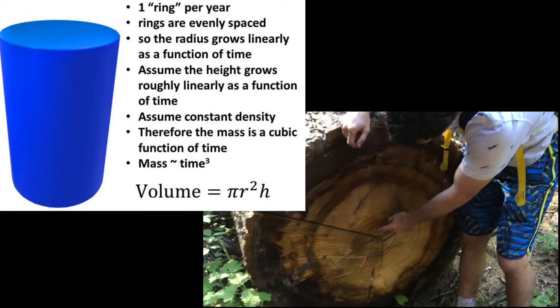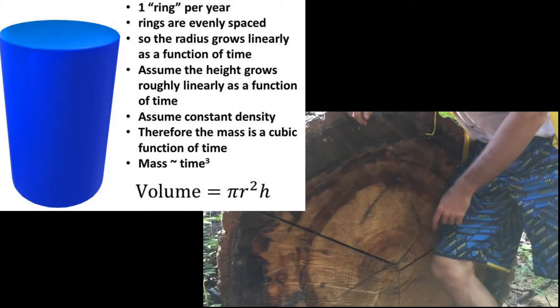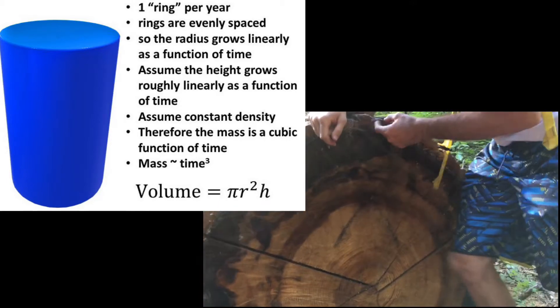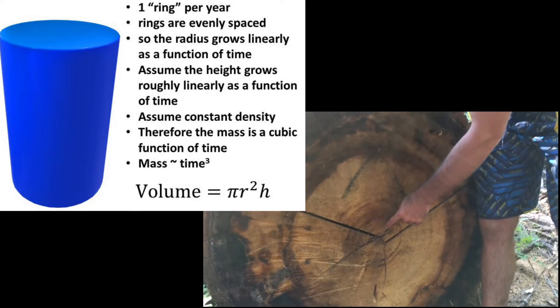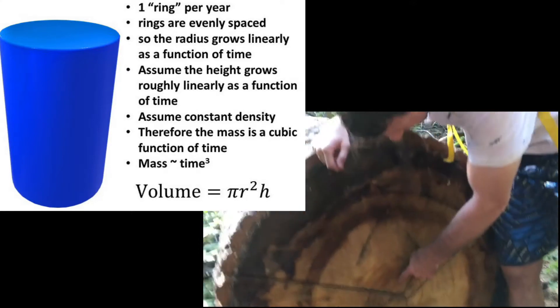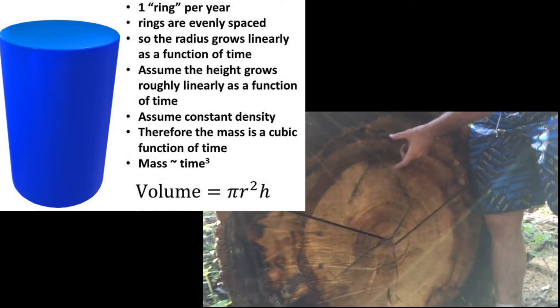If we look at the rings on the tree, you get one ring per year. That's one way to know how old the tree is—you just count all the rings. Some of these old sequoias are 2,000 years old.